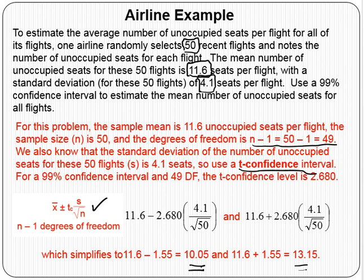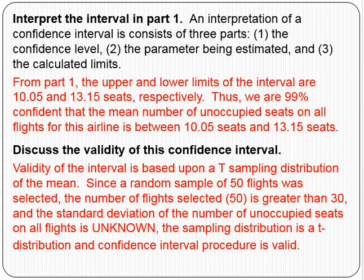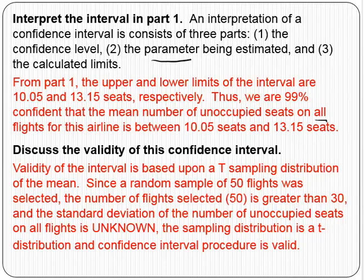Just like the z-confidence interval, you have to interpret the interval. Interpretation requires giving the confidence level, the parameter being estimated — in this case the population mean — and the calculated limits. From our calculation, the upper and lower limits are 10.05 and 13.15. So our interpretation is: we're 99% confident that the mean number of unoccupied seats on all flights for this airline — not just the 50 selected, but on all flights — is between 10.05 and 13.15 seats.